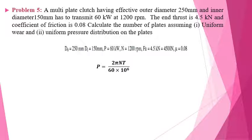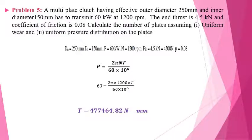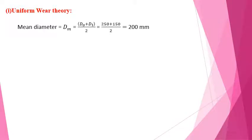Using the relation P = 2πNT / (60 × 10⁶), and substituting the known power and rpm values, the torque is found to be 477,464.82 N·mm. For the first criterion — uniform wear theory — the mean diameter is given by dm = (D_o + D_i) / 2 = (250 + 150) / 2 = 200 mm.